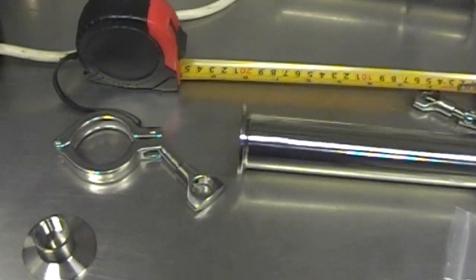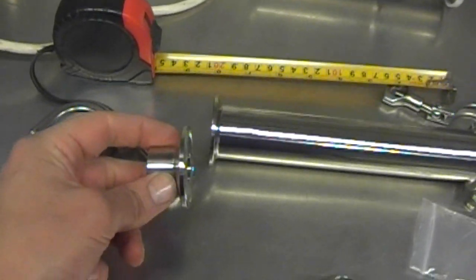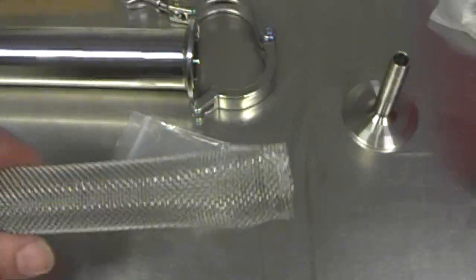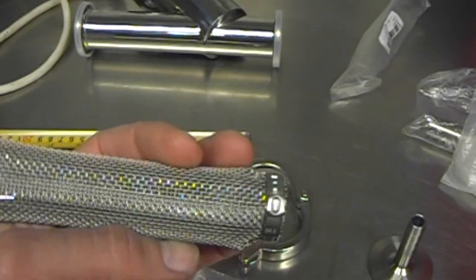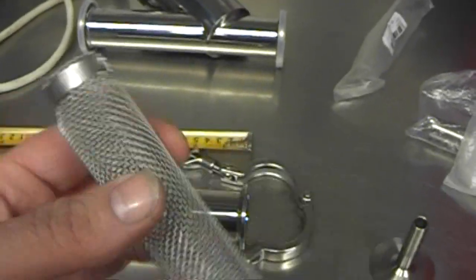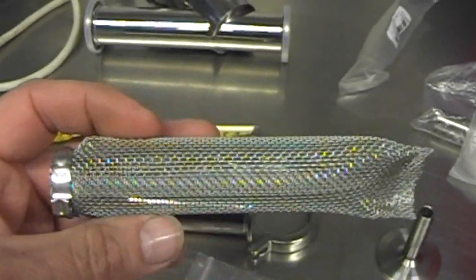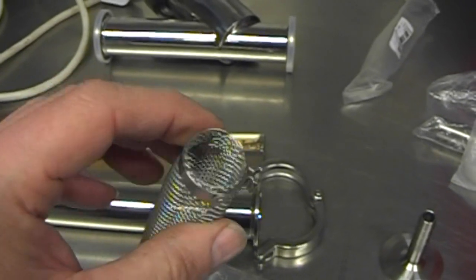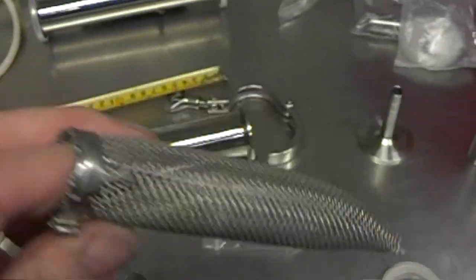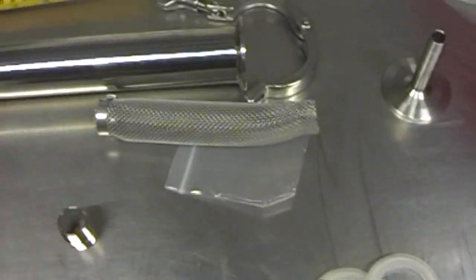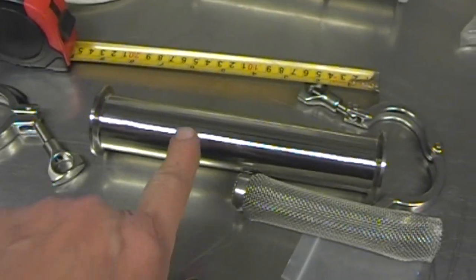So you need obviously a couple of clamps, something to go on the end. And the idea is this is a little hop bazooka hop strainer, whatever you want to call them. I picked this up on eBay a couple of years ago on a penny auction and I sort of ended up paying about two or three quid for it.